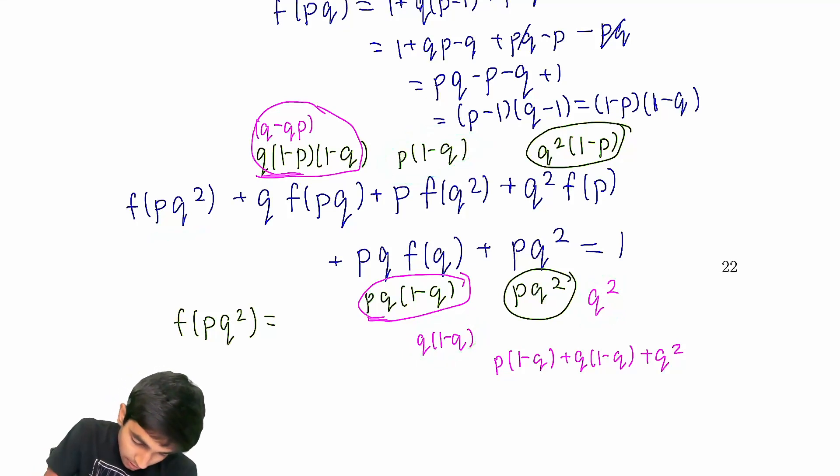And then from here, we just see, okay, these things, this thing, they cancel. And then we're just left with f(pq²) equals 1 minus... or 1 plus pq minus p minus q. And it turns out this is actually just (1-p)(1-q).